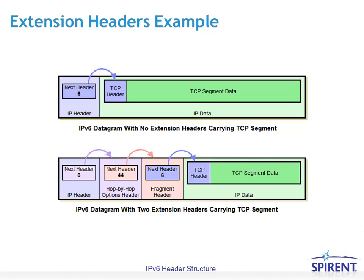The datagram on the bottom actually has a couple of other extension headers chained in between the original IPv6 header and the ultimate application data — the TCP header followed by the TCP segment data. To make this more efficient for processing by intermediate devices such as routers, instead of reverse-engineering via the internet header length and parsing options in every packet, a router that has to process a next header as an intermediate device will see a next header value of 0 in the original IPv6 header.